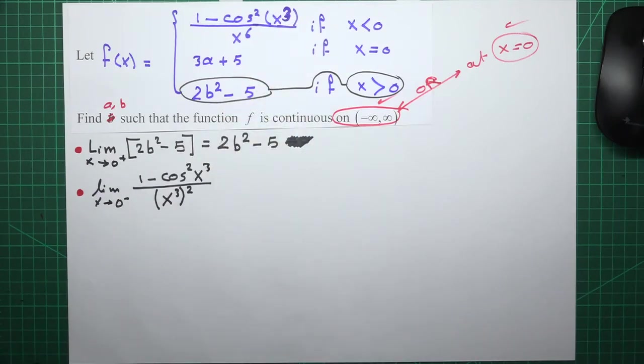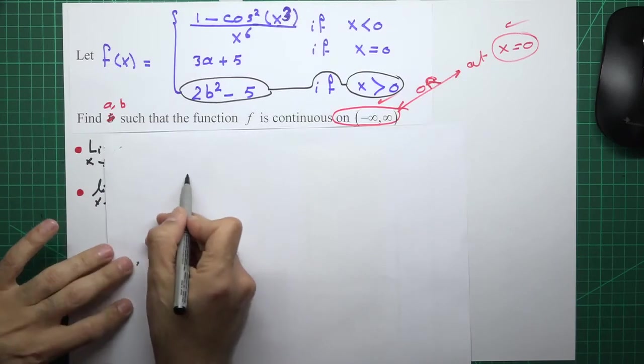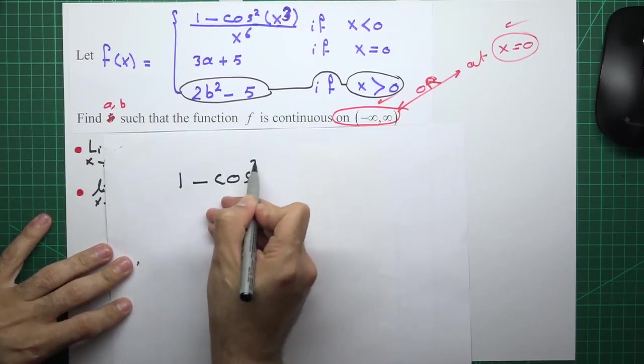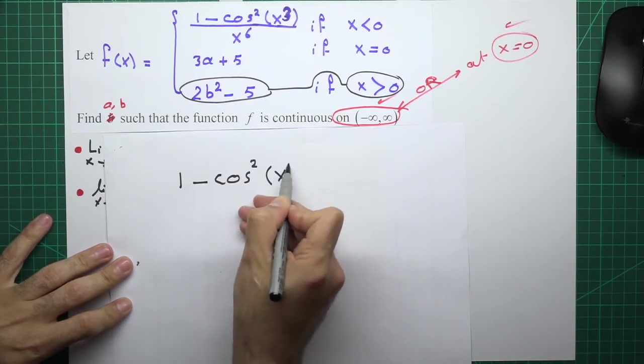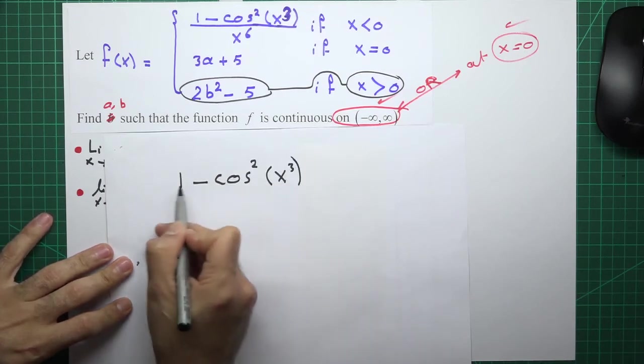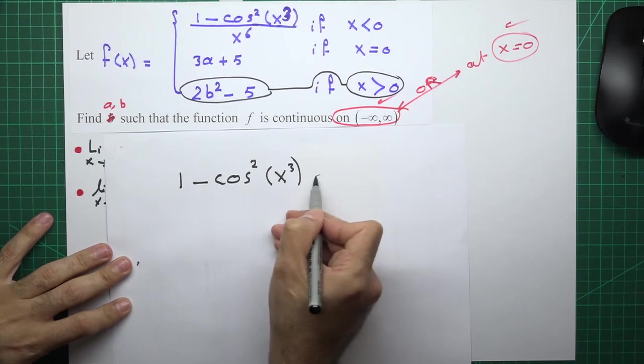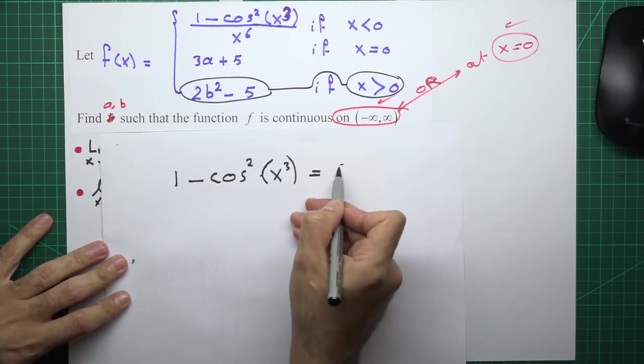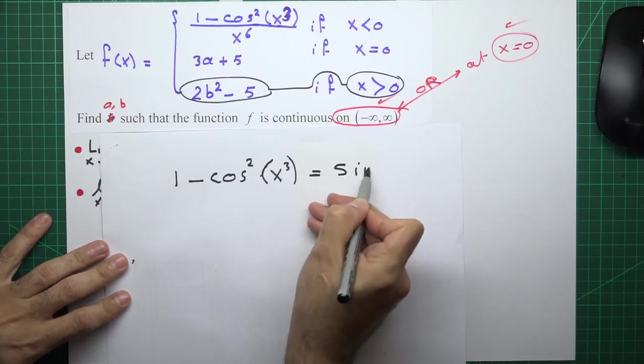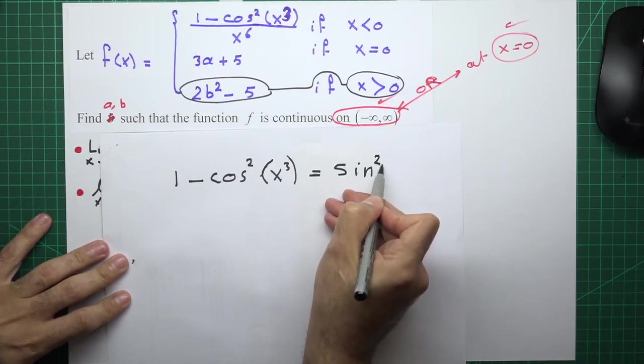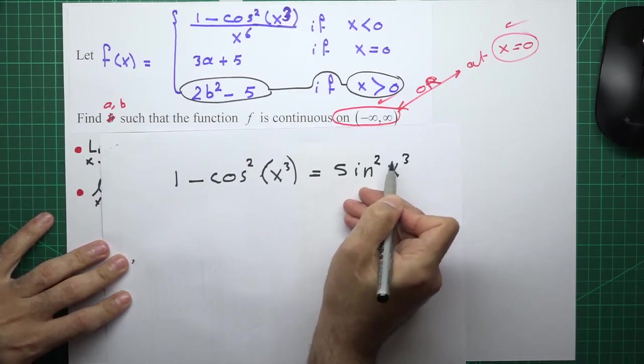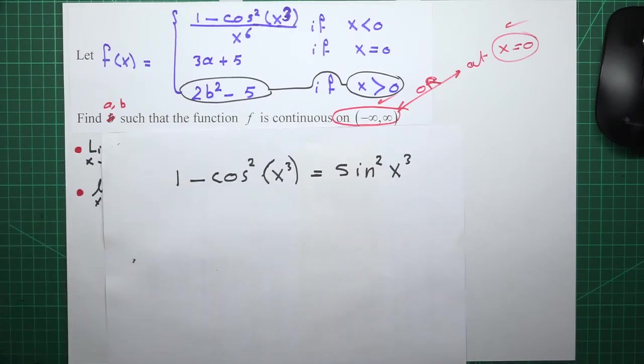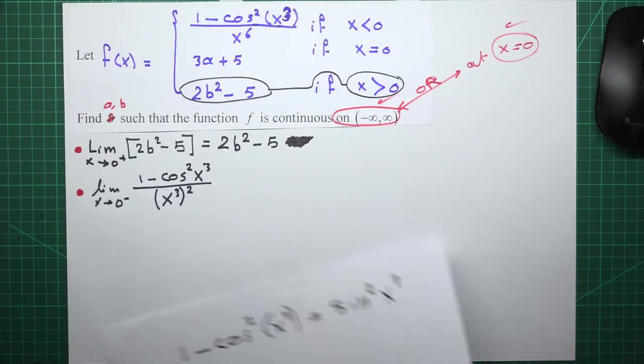If you don't know, it's the right time to learn that 1 minus cosine squared of any angle equals sine squared of x cubed. Why? 1 minus cosine squared equals sine squared. Let me write this modification.